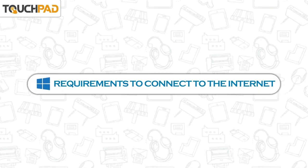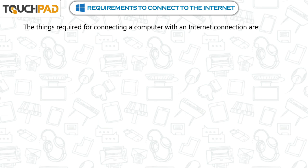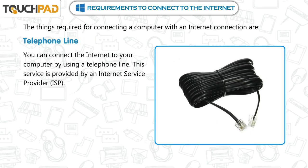Requirements to connect to the internet. The things required for connecting a computer with an internet connection are: Telephone line. You can connect the internet to your computer by using a telephone line.